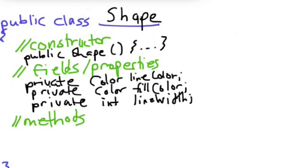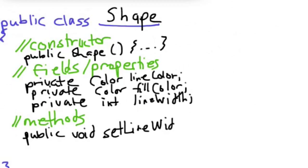And we have a couple of methods. The methods are going to be public so that they can be accessed by other codes that creates shape objects or subclasses of shape. So here we'll have public void setLineWidth. So this is what's called a setter, and it allows us to change the line width field.